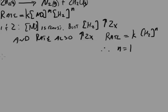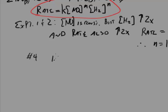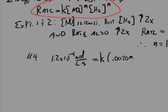To find the order with respect to NO, I'll take a more rigorous approach that will always work even if the concentrations aren't held constant. I'll write the rate law for experiment 4: 1.2×10⁻⁴ mol/L·min = K × (0.0020 mol/L)^M × (0.0060 mol/L)^N.